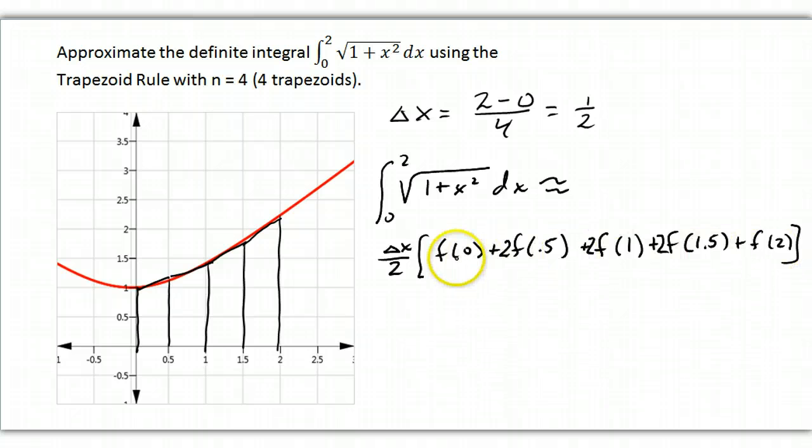Okay? So the end ones, the first and the last, get multiplied by 1, and all the ones in the middle get multiplied by 2. Okay, so 1 half over 2 is 1 fourth. And let's get our calculator.